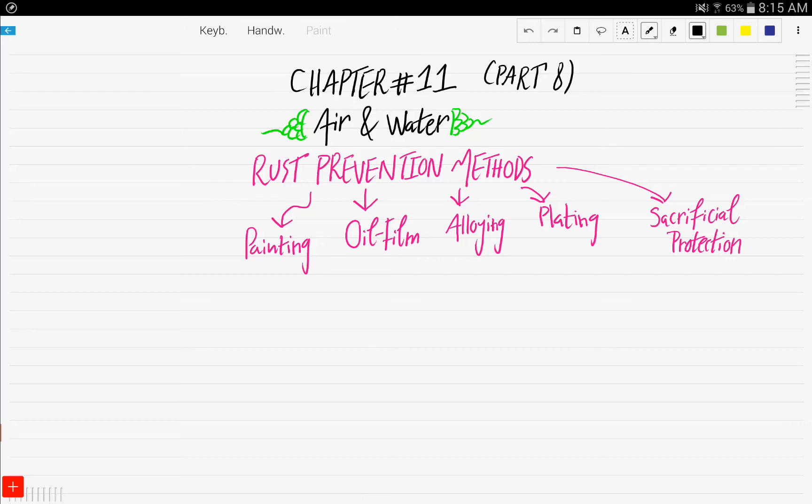Hello and welcome. This is part 8 of Chapter 11, Air and Water. In this video, we'll be discussing the different rust prevention methods. These are: painting, oil film, alloying, plating, and finally, sacrificial protection.